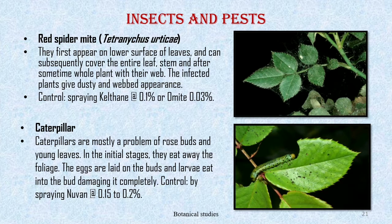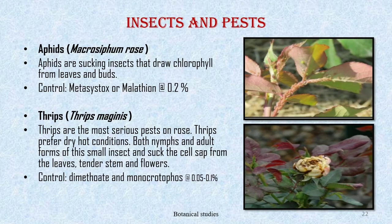Insect and pests of roses: Red spider mite — mites are very common on roses; they first appear on the lower surface of the leaves and can subsequently cover the entire leaf, stem, and after some time the whole plant with their web. The infected plant gives a dusty and webbed appearance. These can be controlled by spraying Kelthane at 0.1% or Omite at 0.03%. Caterpillars are mostly a problem for rose buds and young leaves; in the initial stage they eat away foliage, and larvae eat into the bud damaging it completely. Caterpillars can be controlled by spraying Nuvon at 0.15 to 0.2%.